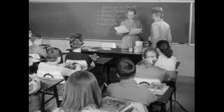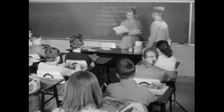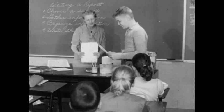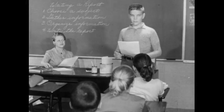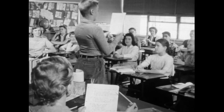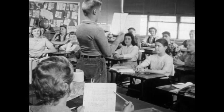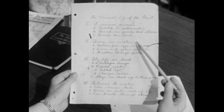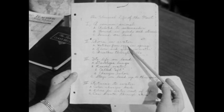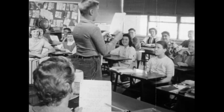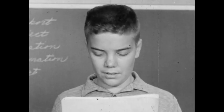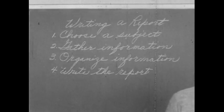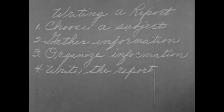The next morning, Ted brought his report to Miss Clark, and she asked him to read it to the class. Ted felt sure of himself because he knew his material thoroughly. And he felt sure that the class understood his report because it was well organized. Miss Clark was pleased because his report followed his outline point by point. Organizing the information into a good outline is one of the most important steps in writing a report. Do you remember the four steps Ted used in writing his report? These four steps can help you, too, when you write your next report.